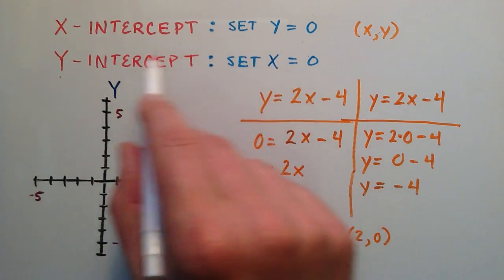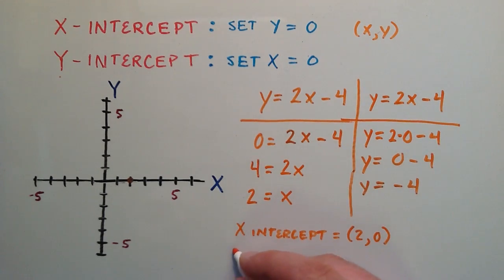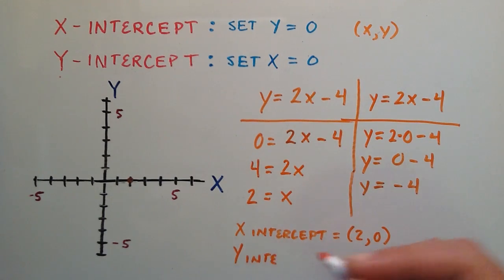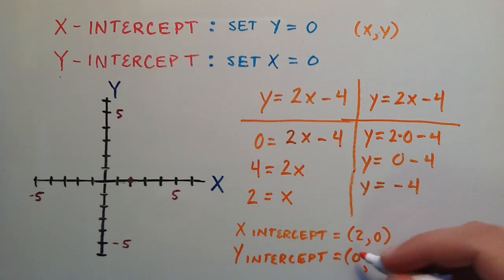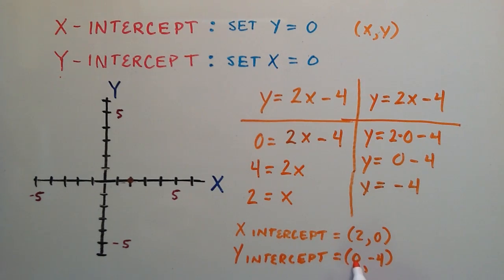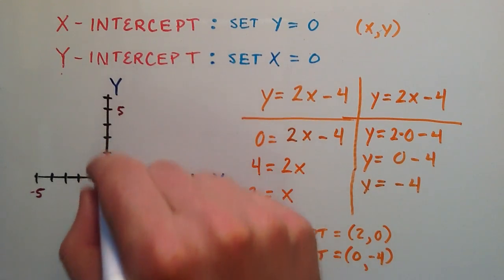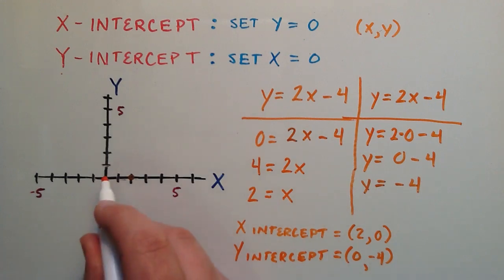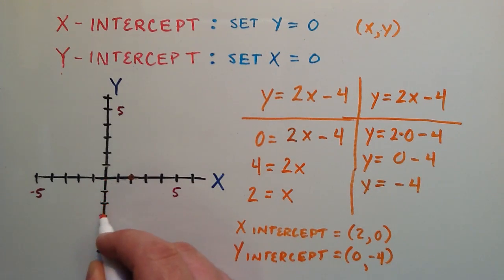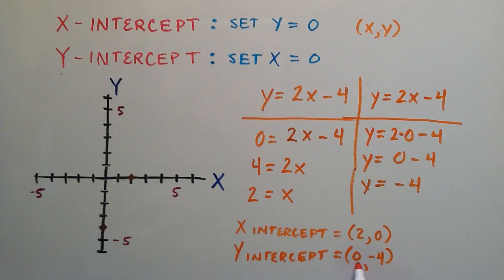We know the x component of the y intercept is 0. So the y intercept is the point with an x component of 0 and a y component of negative 4. Whenever we have an x component of 0, we know we're somewhere on the y axis. We look at the y component to see where — that's negative 4 on the y axis: negative 1, negative 2, negative 3, negative 4. That's our y intercept, represented by the point (0, negative 4).